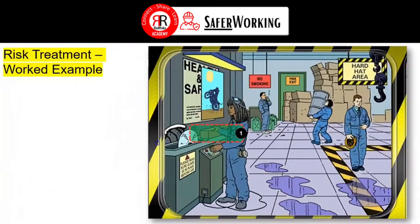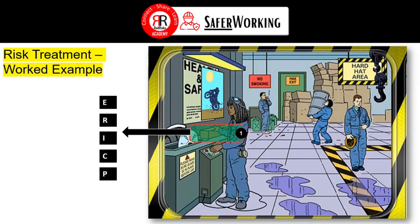Now let's look at just one particular example — the lady using the circular saw — and apply our hierarchy of control. The hierarchy of control can be considered in its basic form using the acronym ERICP: E is for elimination, R is for reduction, I is for isolation, C is for control, and P is for PPE.